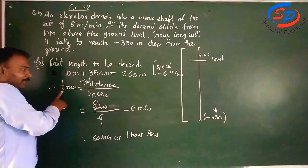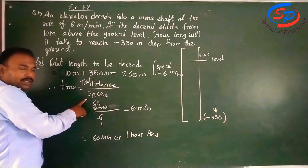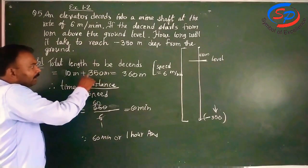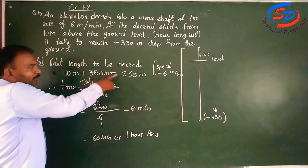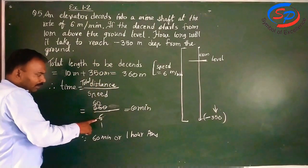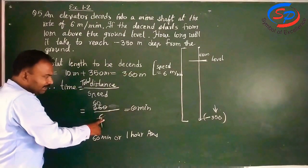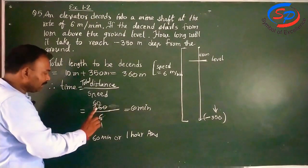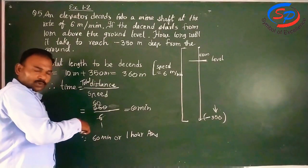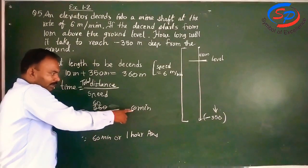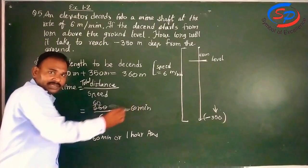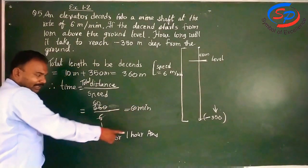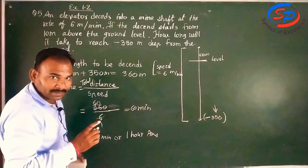We have used the formula: Time equals total distance covered upon speed. Putting the values, here total distance is 360 meter and the speed is 6 meter per minute. In this case, when we solve this, we get 60 minutes as answer. Then 60 minutes equals 1 hour. Thank you.